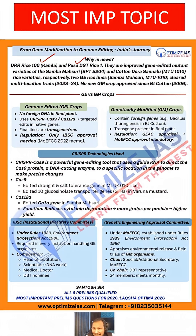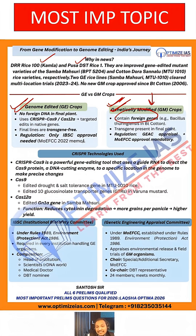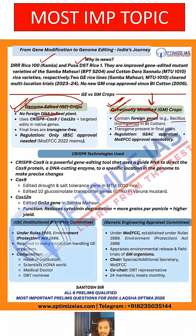These varieties are gene-edited, not genetically modified. You need to know the difference between gene-edited and genetically modified crops since GM crops are also very important for UPSC. In genetically modified crops, foreign genes are used — for example, in Bt cotton we use a gene from Bacillus thuringiensis, a bacteria. In gene-edited crops, no foreign DNA is used; we simply edit the crop's own genome using the CRISPR-CAS9 technique to bring desired qualities.